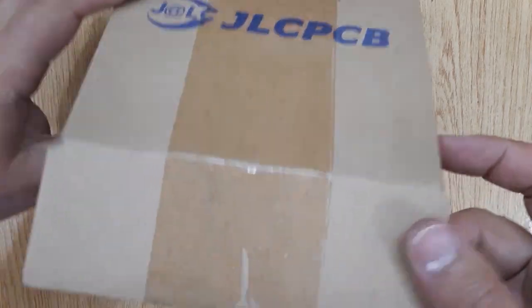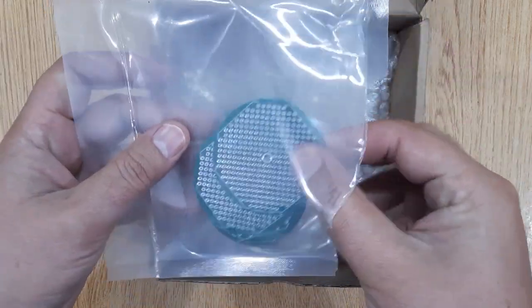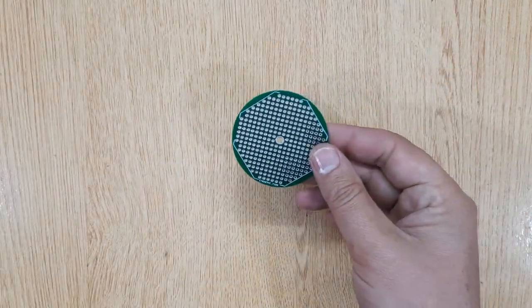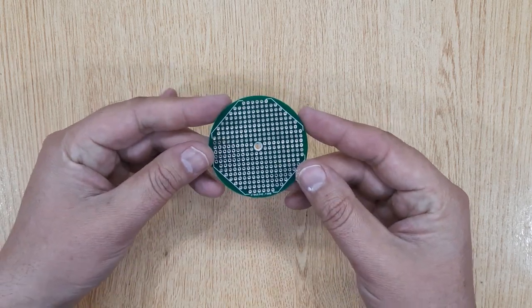The next thing you will need is a small piece of PCB. I have ordered these PCBs on jlcpcb.com. If you are also interested, I will show you the complete ordering process at the end of this video.